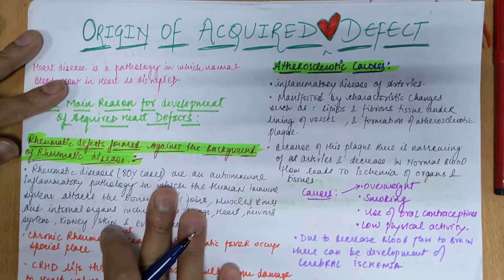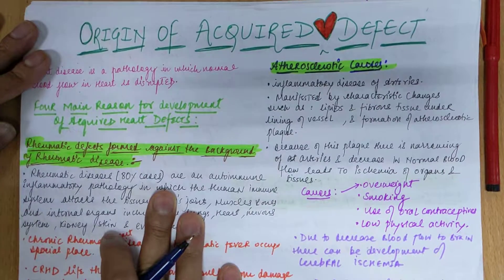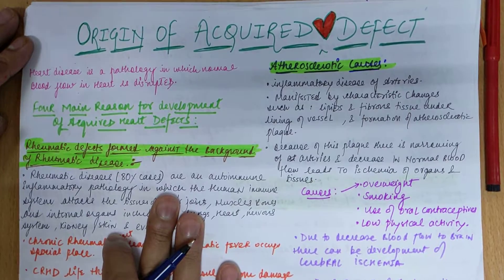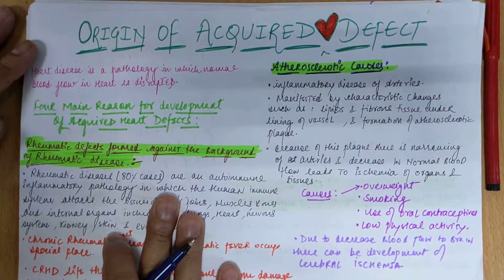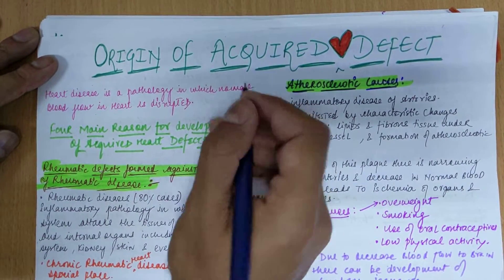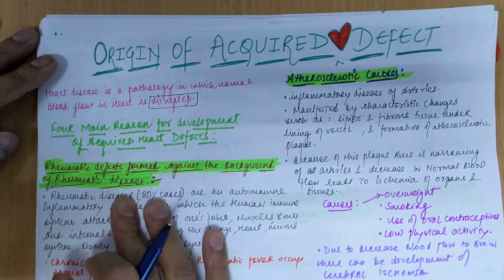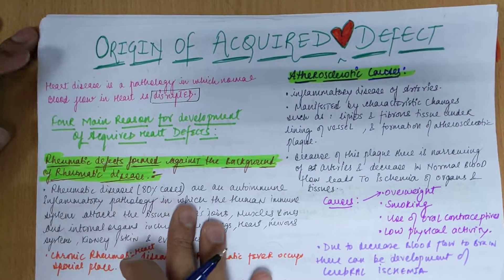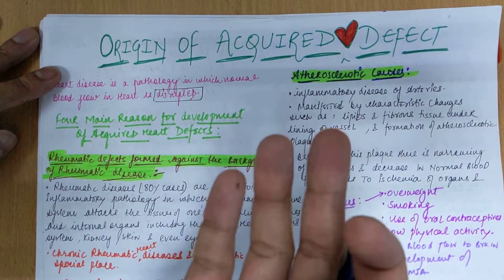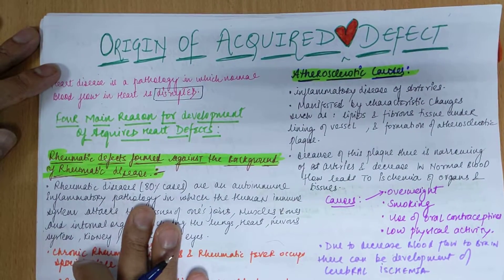Hello everyone. In this video we will be discussing the topic of the origin of acquired heart defects — pathologies which occur after birth. There can be many causes for the development of these heart defects. Heart disease is a pathology in which normal blood flow in the heart is disrupted, and there can be four main causes or diseases which can lead to the development of acquired heart defects.